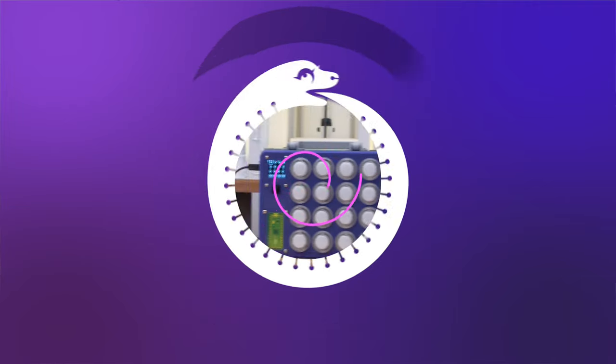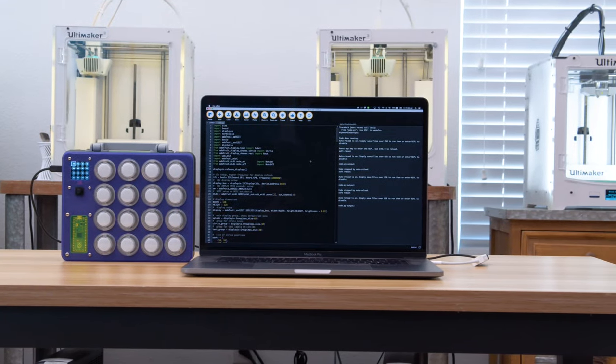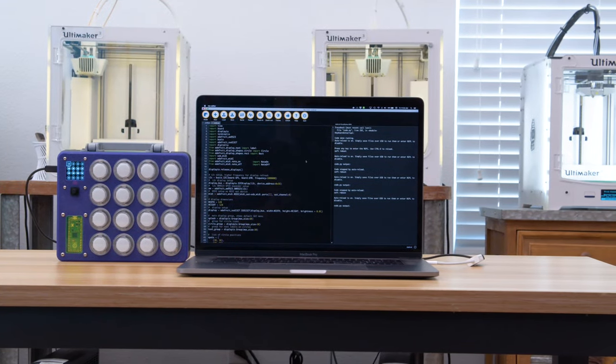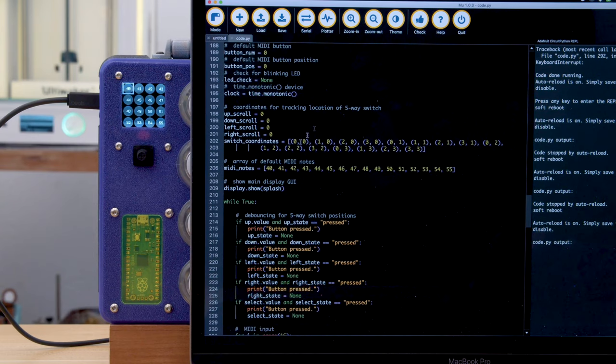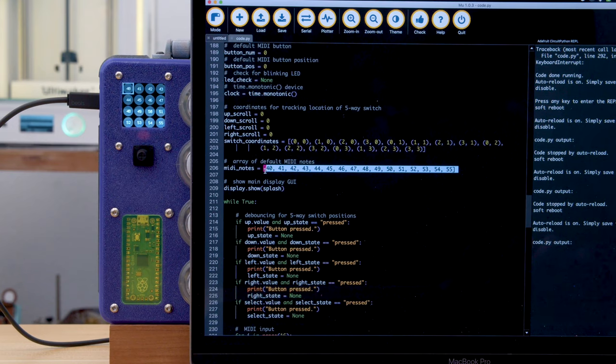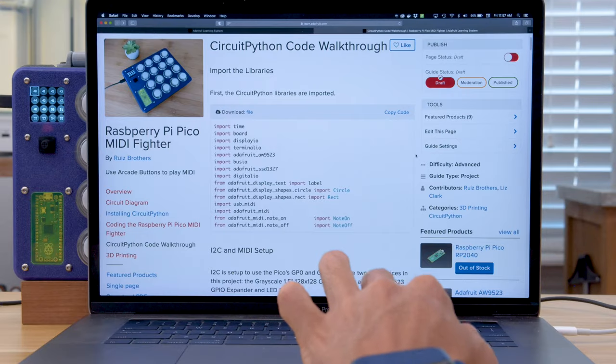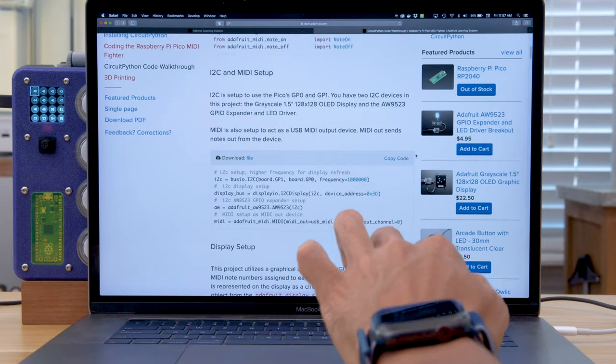The code for this project was written by Liz Clark - you can check out her projects on our YouTube channel, Blitz City DIY. This uses the MIDI library for Circuit Python and features lots of comments, so it's great for folks who are just getting started with programming. The code walkthrough by Liz is very well documented and breaks down all the features. You can learn how to customize it.